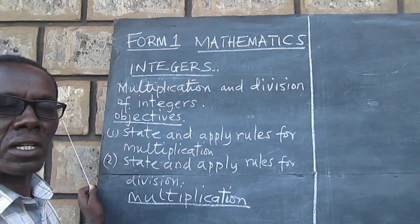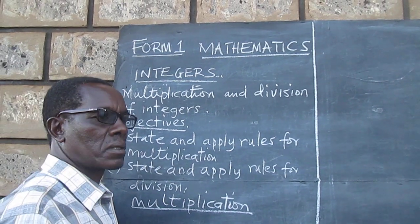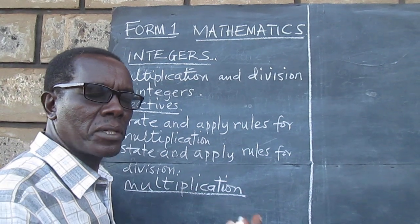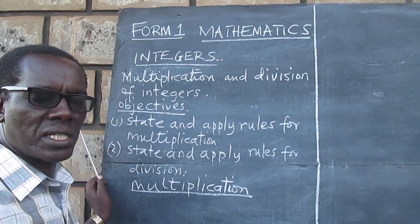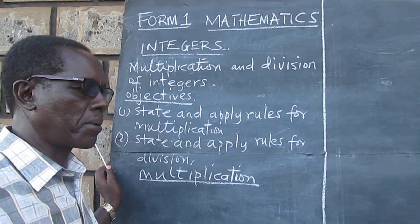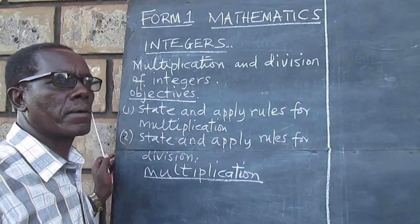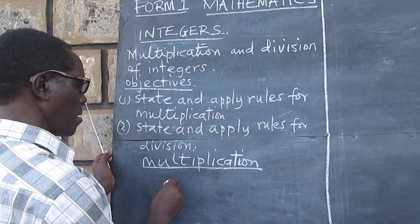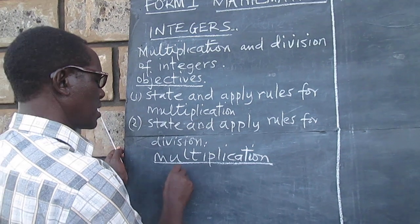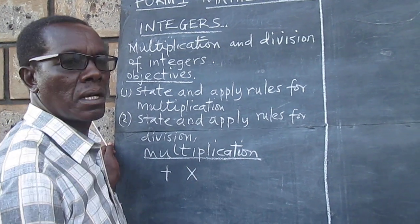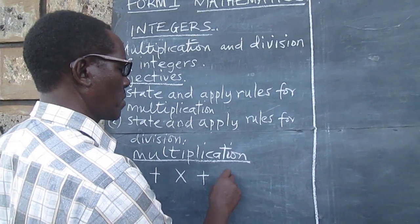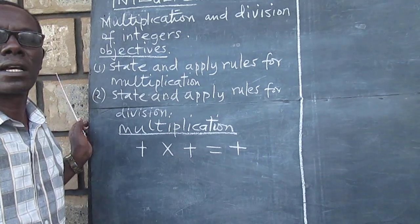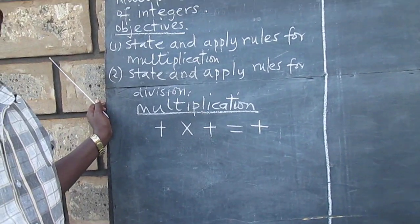In multiplication, a positive number multiplied by a positive number always gives a positive answer. So we say, positive times positive equals positive. That is our rule number one.